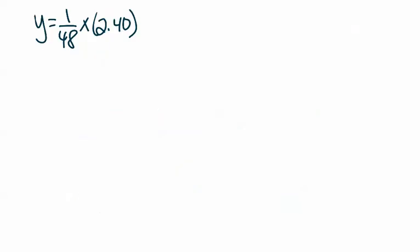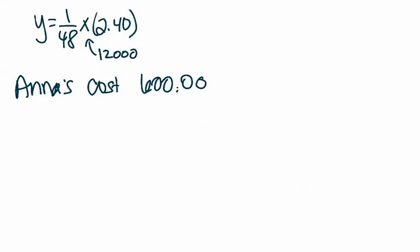All right, so now the next part is asking us to determine the cost for Anna to drive 12,000 miles using her prepaid gasoline. So what you're going to do is you're then going to take 12,000 because that X represents the miles. You're going to place 12,000 into your equation and that's going to give you the cost. So Anna's cost is $600. And you shouldn't be typing that dollar sign into Buzz, just the $600 will work.